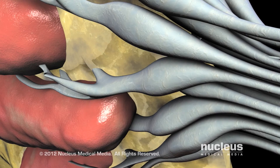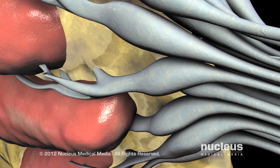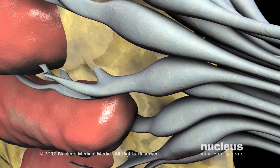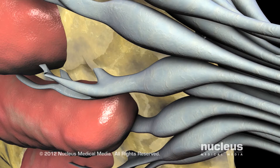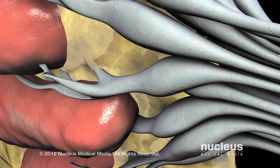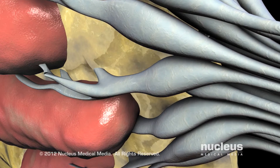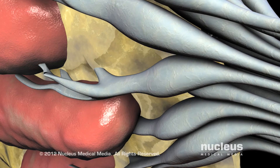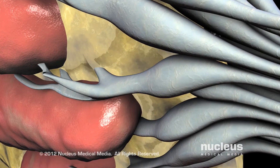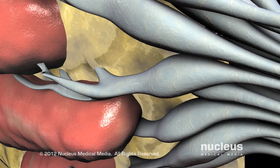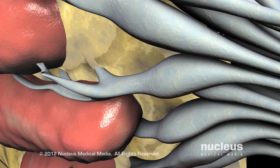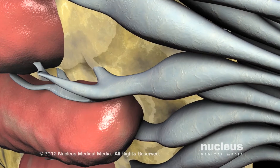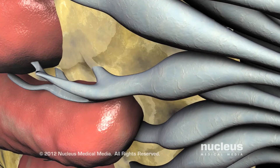The staging of breast cancer refers to the extent of the disease. The cancer stage is based on several factors, including the size of the tumor, if any lymph nodes are involved, if the cancer is invasive or non-invasive, and if the cancer has spread to areas beyond the breast.